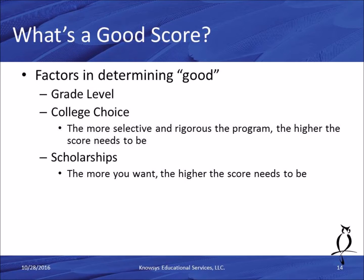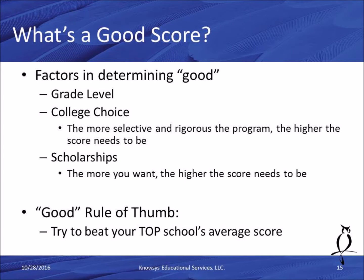A third factor in determining a good score is scholarships. The more scholarship money you want, the higher your score needs to be, since it's used in allocating scholarship money — both private scholarships and those within the university. A good rule of thumb is to beat your top school's average score, found at collegeboard.org under the score section. You want to beat the average of the middle 50th percentile of admitted students so there's no question about your academic fit.